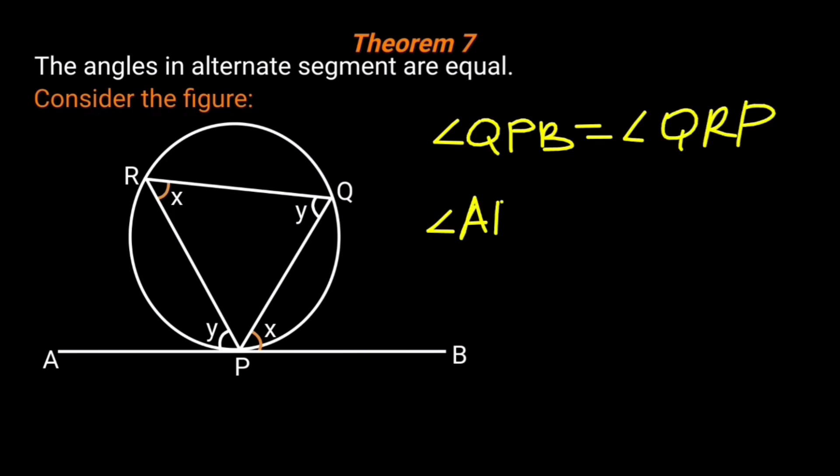Also, angle APR is equal to angle RQP, which is in the alternate segment.